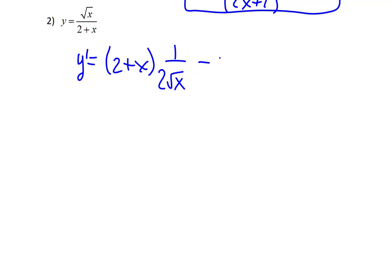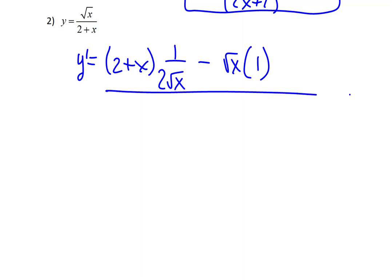Continuing: low d high minus high, which is square root of x, times d low — the derivative of 2 plus x is just 1 — all over low squared, which is 2 plus x squared. It's typically not good to leave a complex fraction in our answer, so we need a step or two more. Let's find a common denominator for the large numerator terms, which would be 2 root x. We'll multiply the second term by 2 root x over 2 root x.